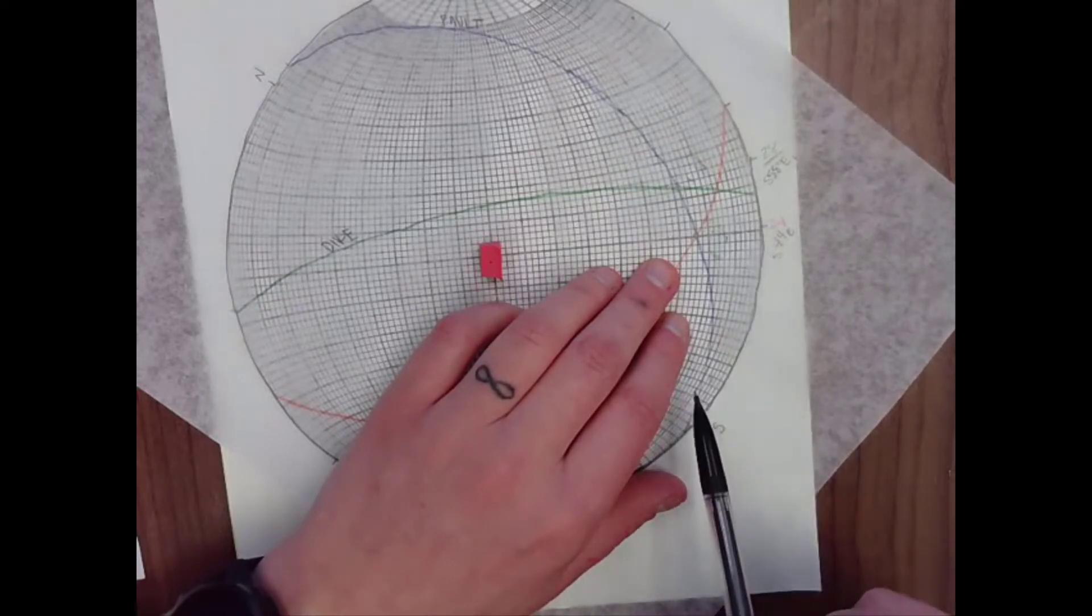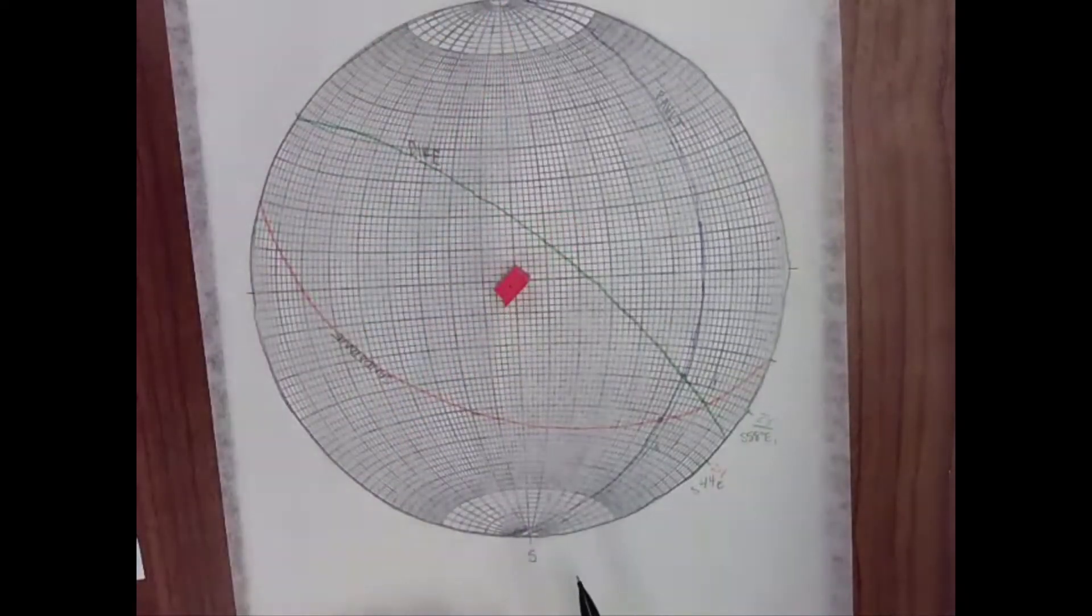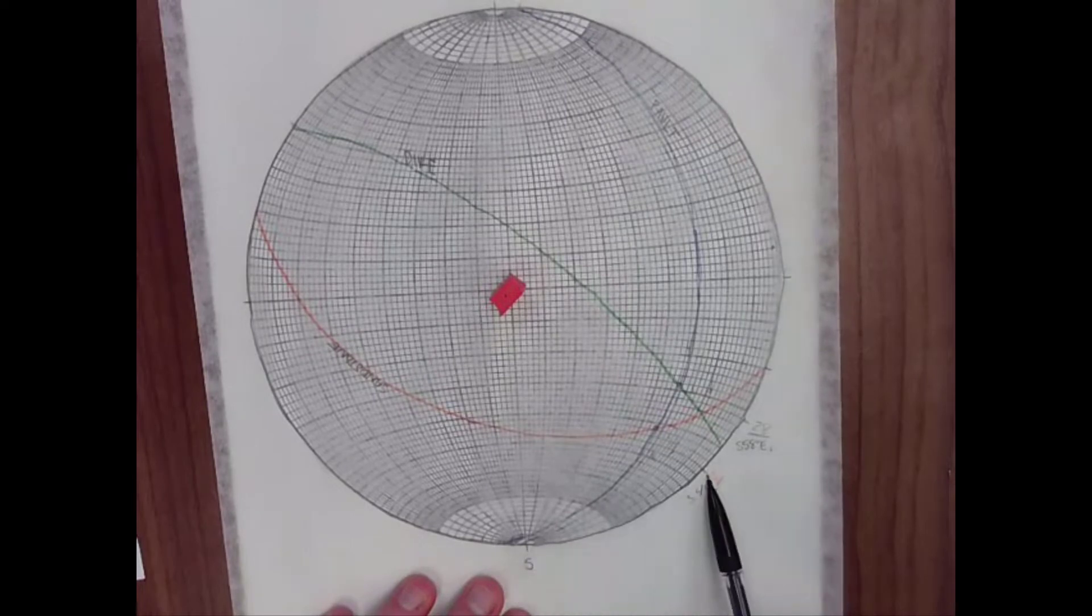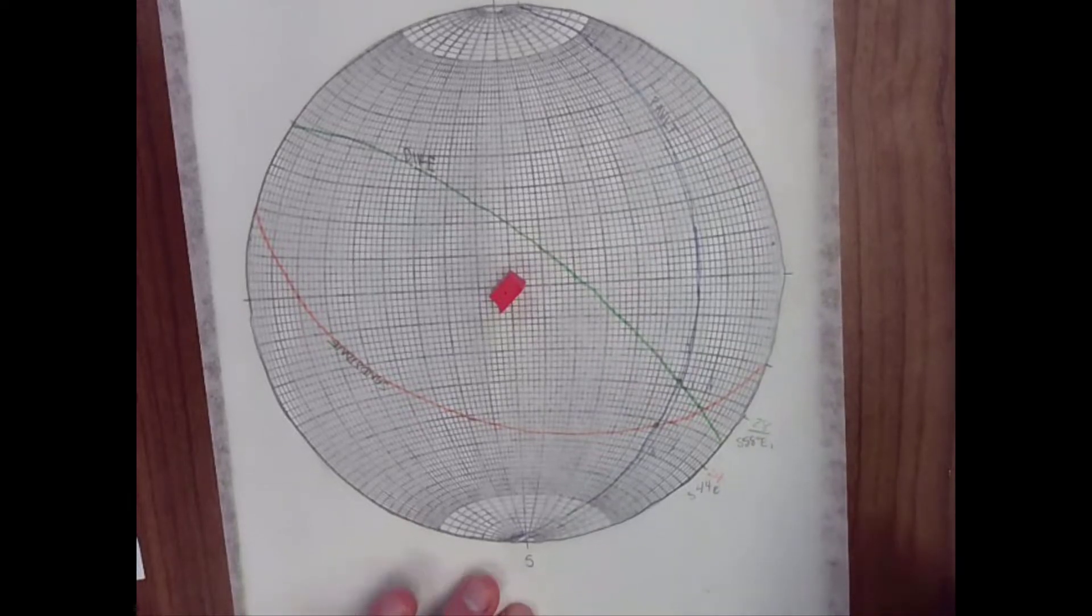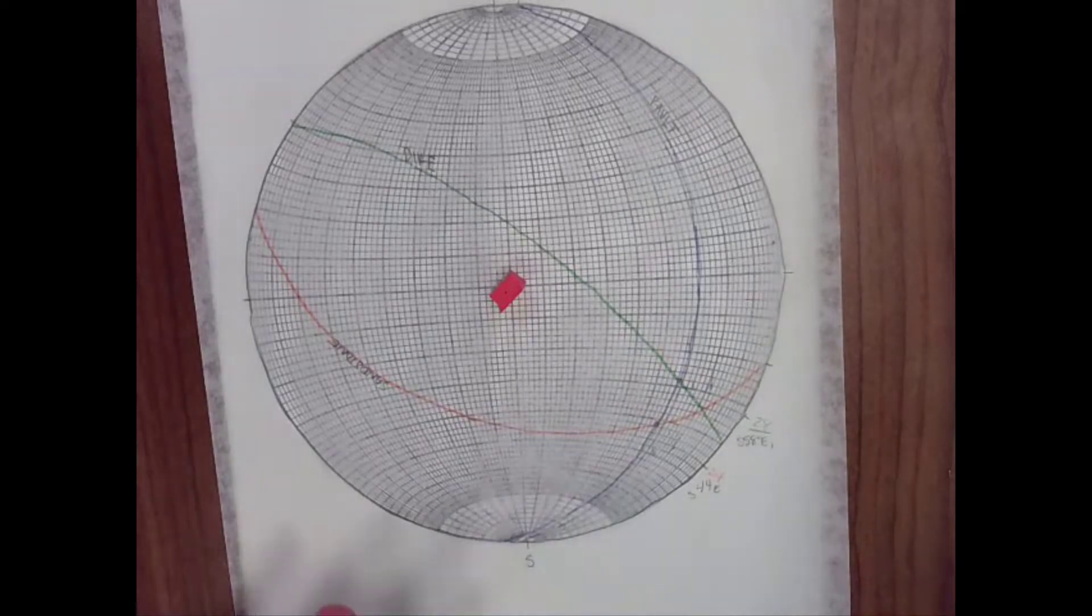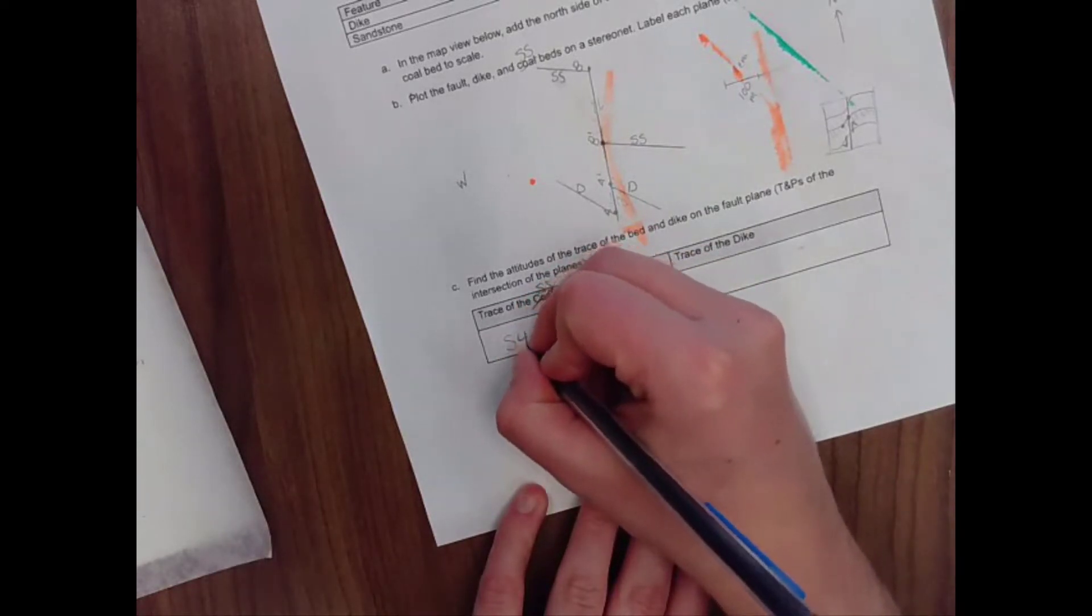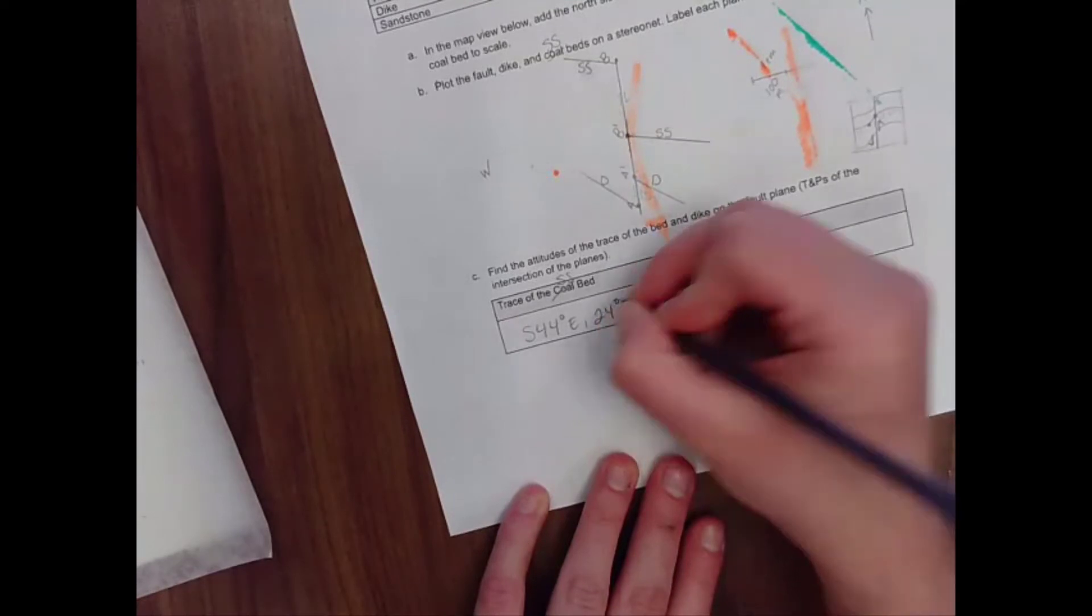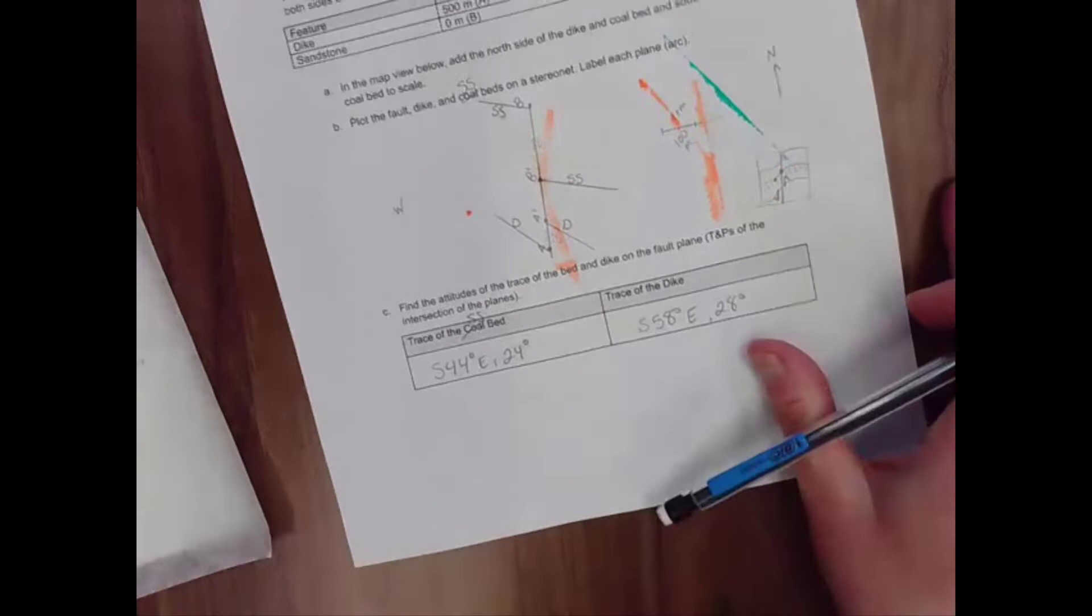Don't forget to mark the outside of your circle when you do that. If you don't mark the outside of your circle, you won't be able to get your trend. Rotate north back to north and then count over starting at the south because we're closer to whatever you marked on the primitive circle. So for the sandstone unit, we made the mark. We said that it was plunging 24 degrees and you can count over and you get 44. So it's south 44 east 24. That's the plunge of the intersection between the sandstone unit and the fault. And then you can keep counting up to where you marked it for the dike and you get south 58 east 28. And that's what we would get for the trend and plunge of the intersection with the dike and the fault.